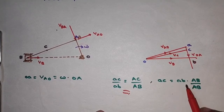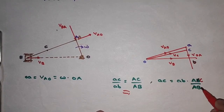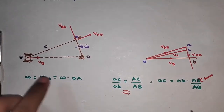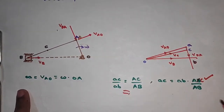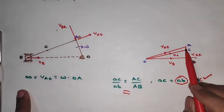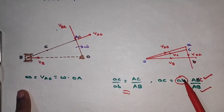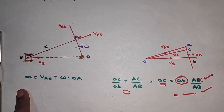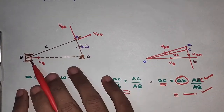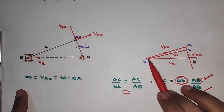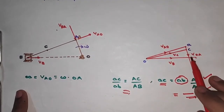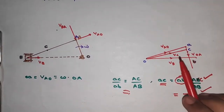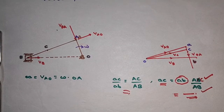The vector AC equals AB (vector) multiplied by capital AC divided by capital AB. We know the length of link AC and the length AB, as well as the length of vector AB from the velocity triangle. Substituting gives the magnitude of AC. For direction, any point on the connecting rod AB moves parallel to that rod. From O, draw a line whose magnitude is known and whose direction is parallel to link AB; this line intersects vector AB at point C. This determines the velocity of point C on the connecting rod.